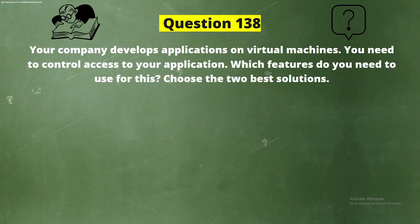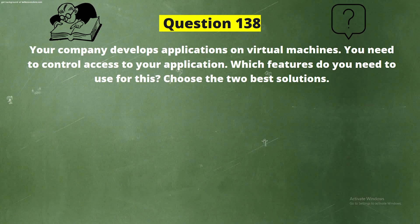Question 138. Your company develops applications on virtual machines. You need to control access to your application. Which features do you need to use for this? Choose the two best solutions.